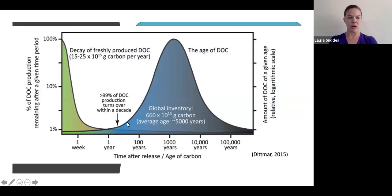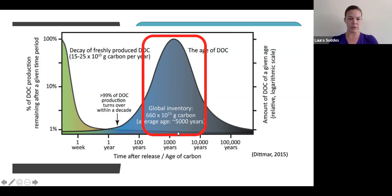As you can see in this figure, a small fraction of DOC undergoes very slow decomposition and accumulates in the ocean over thousands of years. Overall, there's an inverse relationship between DOC age and decomposition rate, meaning that as this DOC ages, it undergoes decomposition at a very slow rate, which allows it to accumulate into this huge, relatively old pool.